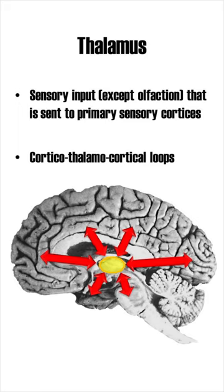The thalamus is also involved in several loops that connect cortical areas to cortico-cortical areas, as well as the basal ganglia and the cerebellum.